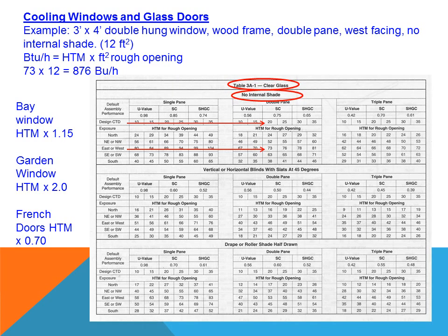Here is a simple example: we have a 3x4 double hung window with a wood frame, double pane, facing west, with no internal shading — which is 12 square feet (3 times 4). We fill in the information and to figure out the number of BTUs, we take the square feet and multiply it times the heat transfer factor. Looking at the chart, it's facing west with a temperature difference TD of 20 — 95 degrees outside and 75 degrees inside. Following that down, we get 73. That one window of only 12 square feet will transmit 876 BTUs per hour.